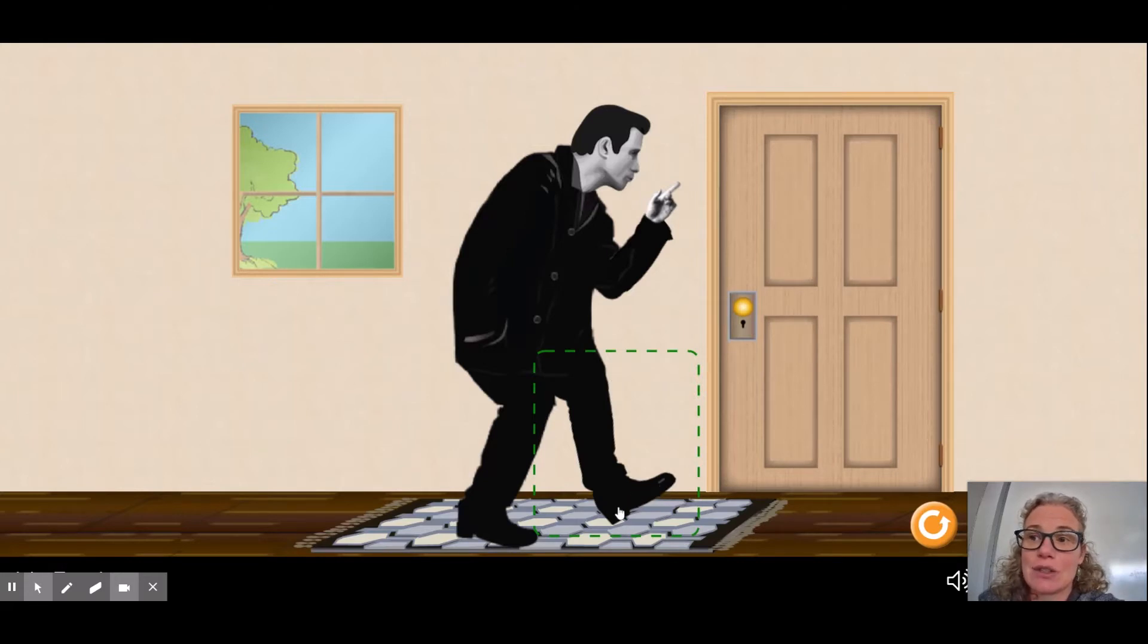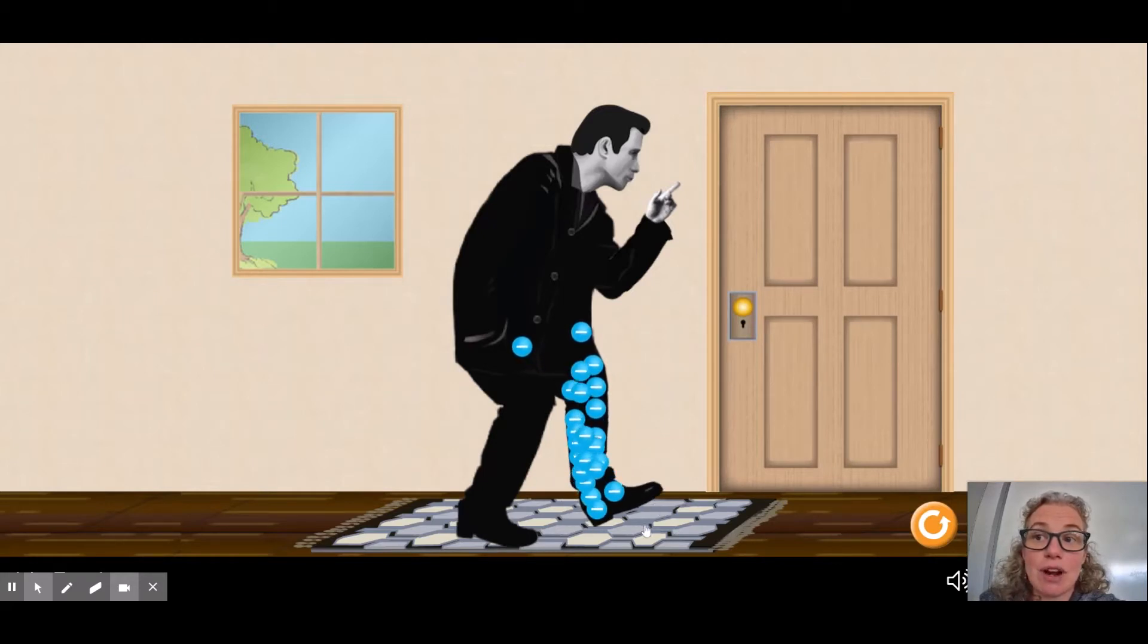And he is going to rub his foot on the carpet, and as he does so, you're going to notice all these little blue dots. Those represent electrons. So as he rubs his foot, electrons from the carpet are transferred to his body.